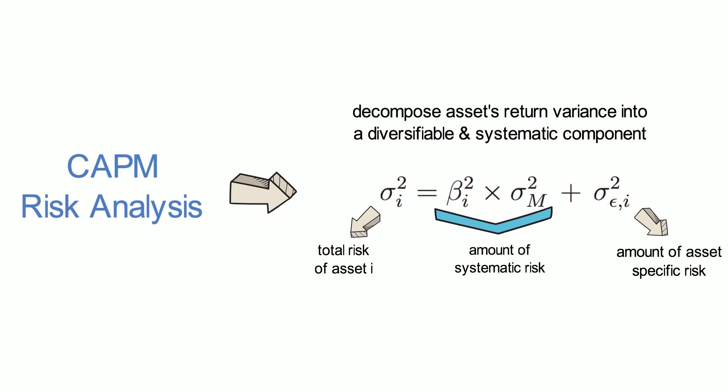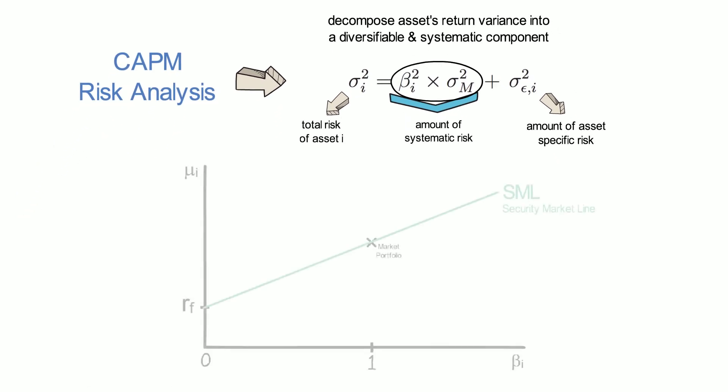And in addition, remember, only beta i squared times sigma squared m is compensated by a risk premium. The risk that comes from sigma squared epsilon i is not compensated by a risk premium, according to the CAPM. And graphically, that is represented by what we called in a previous video the security market line.